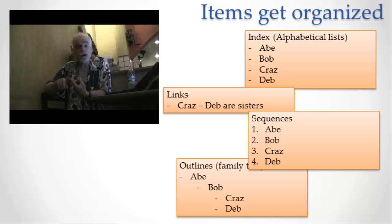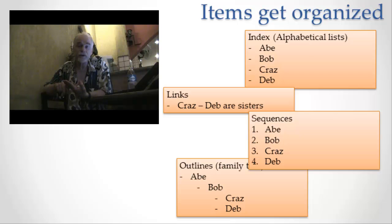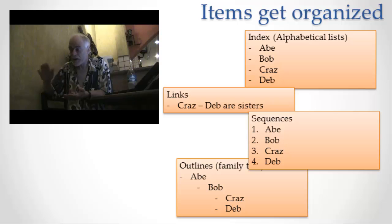So major way of organizing items of information: number one is indexes, major way number two is links, and major way number three is sequences. I can put those friends in some order where I want you to look at the one at the front of the list first, then the next one, the next one, the next one.